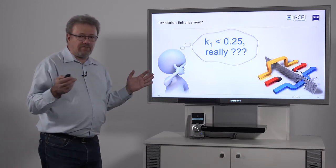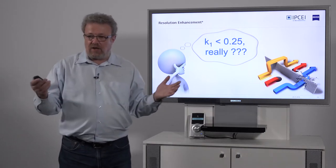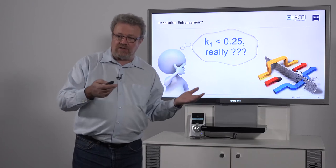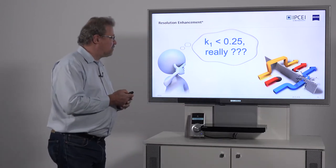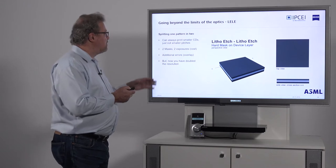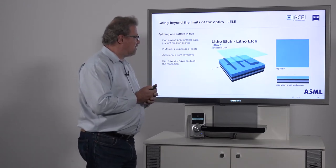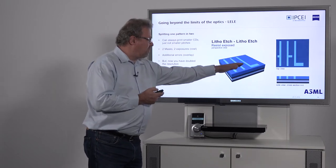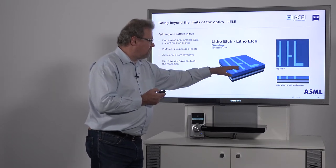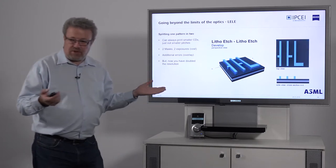Of course, the physics is still right. You cannot print anything lithographically with a K1 of less than 0.25. But what you can do is split your feature. You see this example here. You print only half of what you want to print, which still has a pitch that you can print.